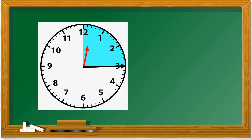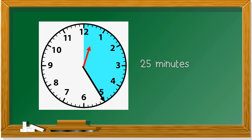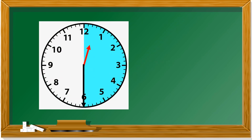This is 3 times 5 — 15 minutes. Or there's another term: quarter hour. A quarter of an hour, or quarter hour. In Malay, it's called satu suku. Next, 4 times 5 is 20 minutes, followed by 25 minutes. Remember, this is all multiplication of 5. Then 30 minutes.